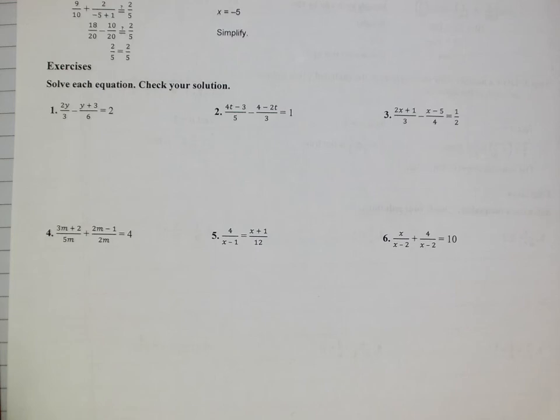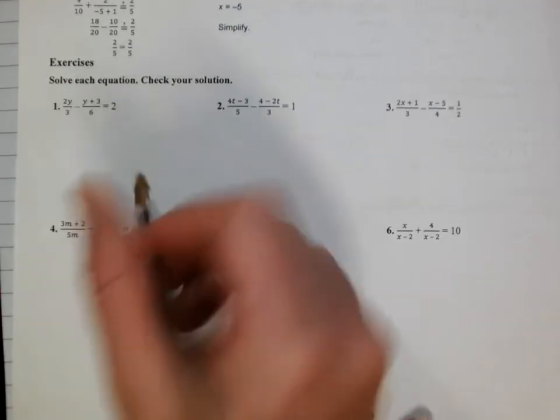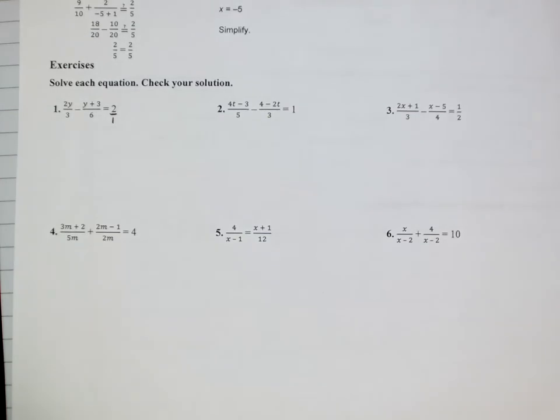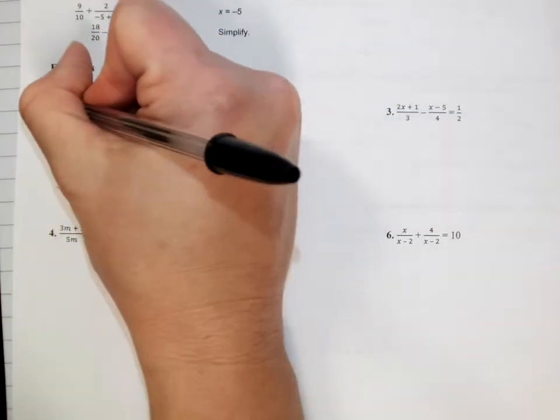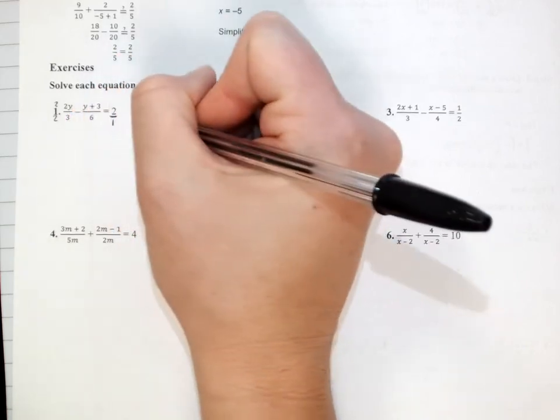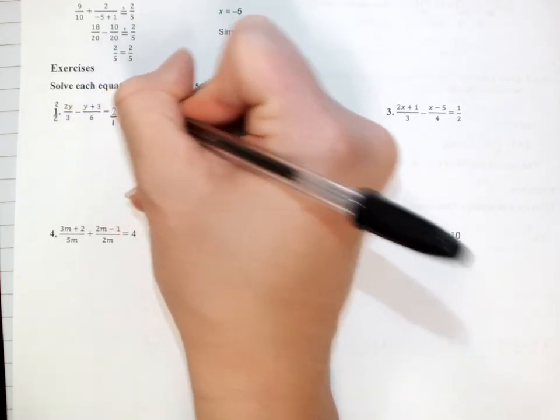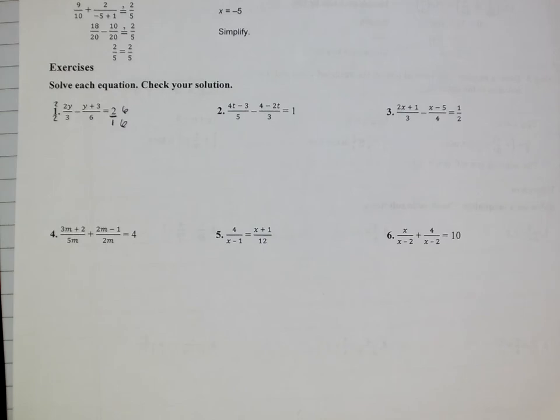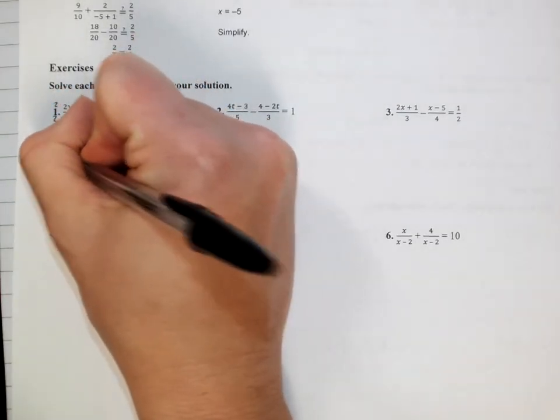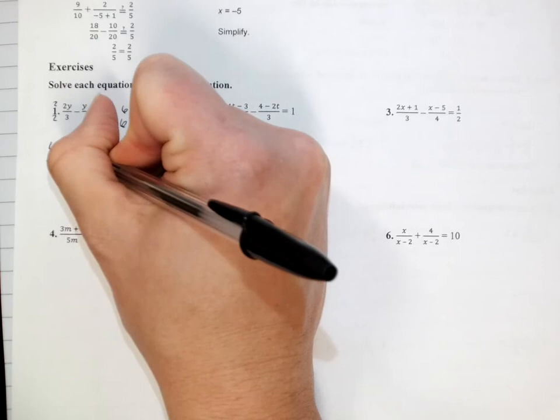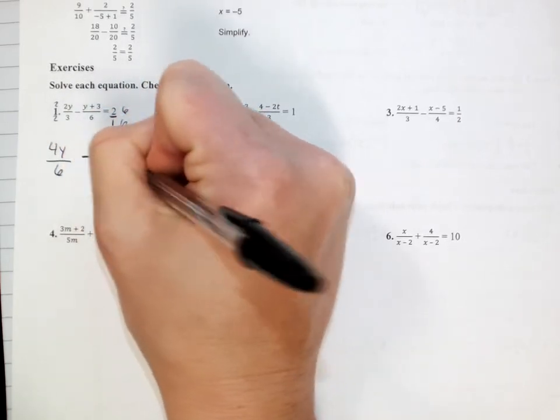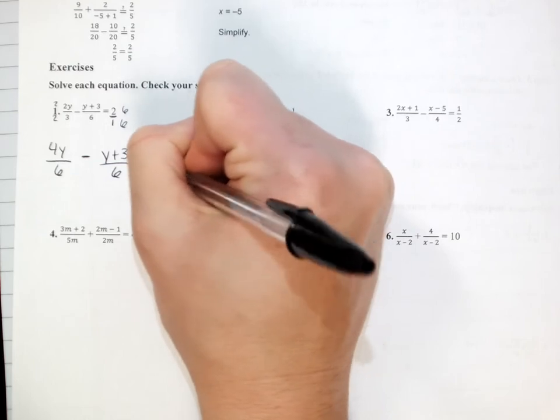So these first ones are kind of baby equations because if you look at all the denominators, they just have numbers in them. That's okay, it's a good place to start. So first thing, I want to make all of these, and note that this one right now just has a 1 down there, common denominators. So a 3, a 6, and a 1. I could turn all of those into a 6 pretty easy. So I'm going to multiply this one by 2 top and bottom. This one already has a 6. This one by a 6 on top and bottom. When I simplify my tops here,